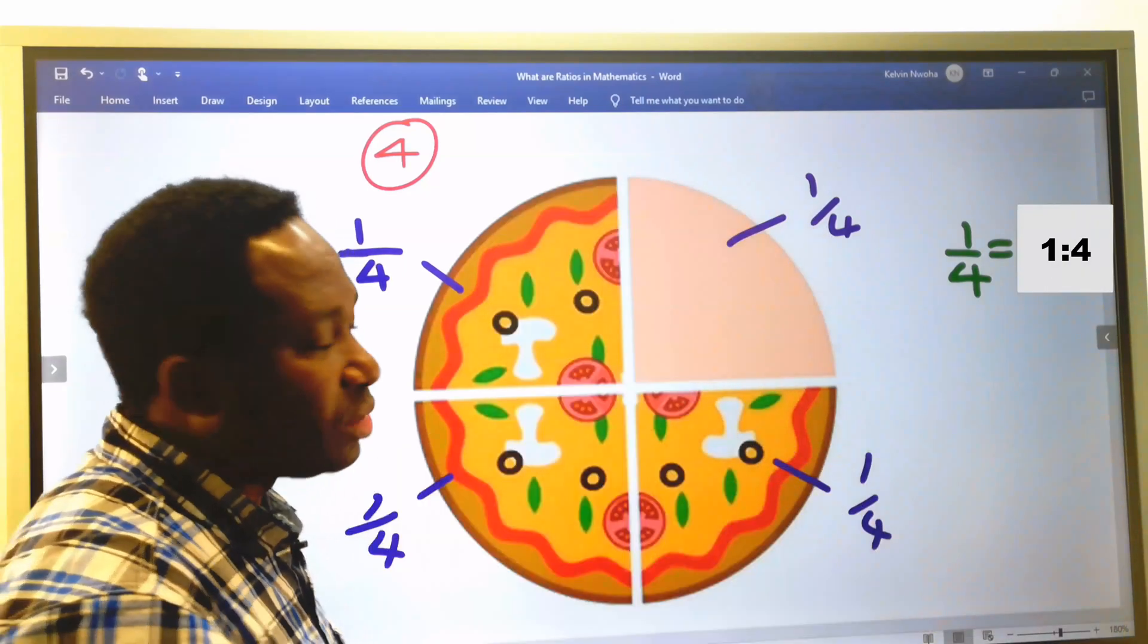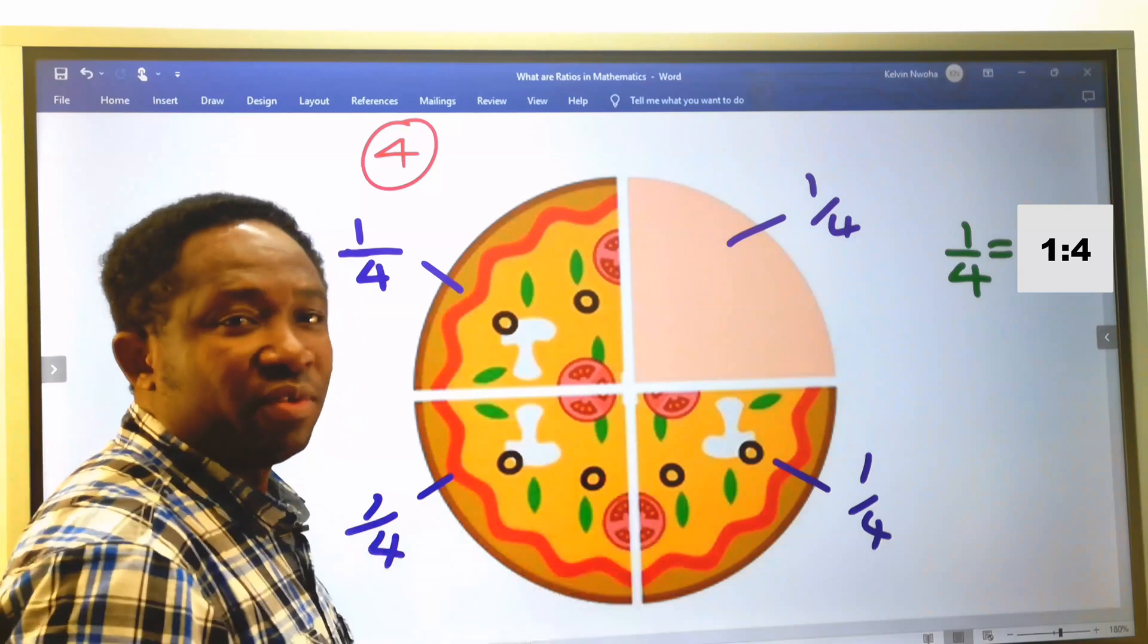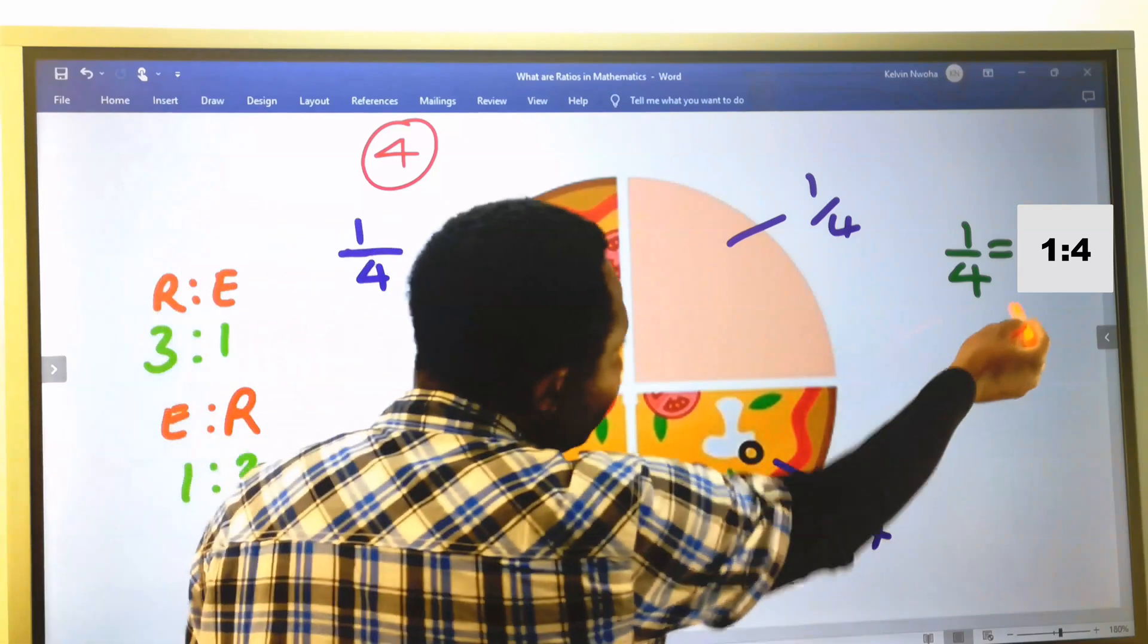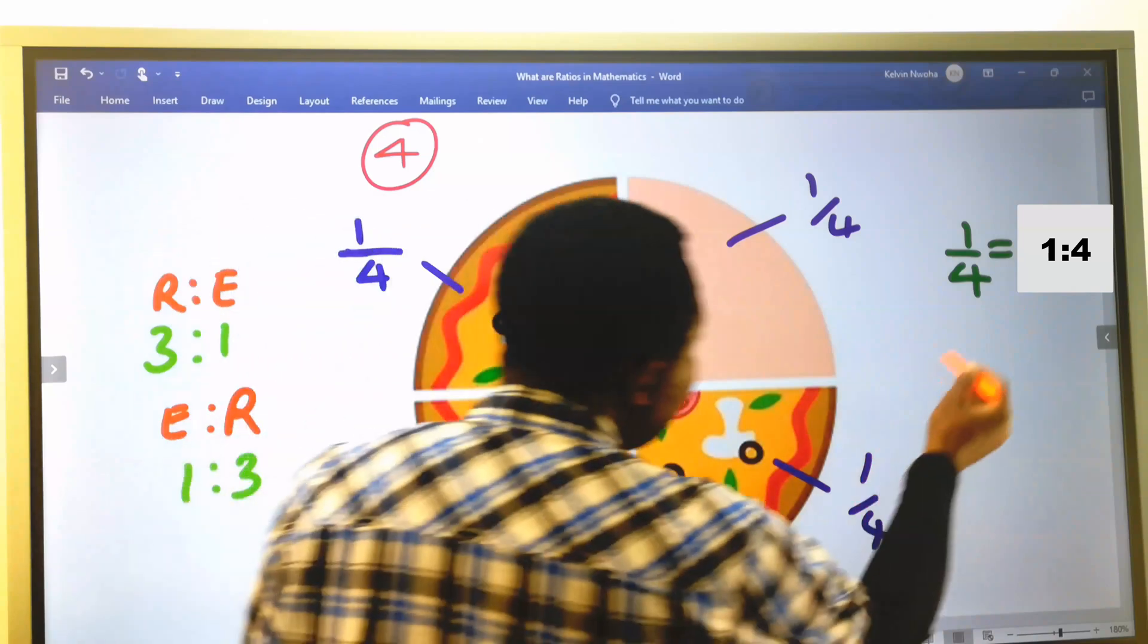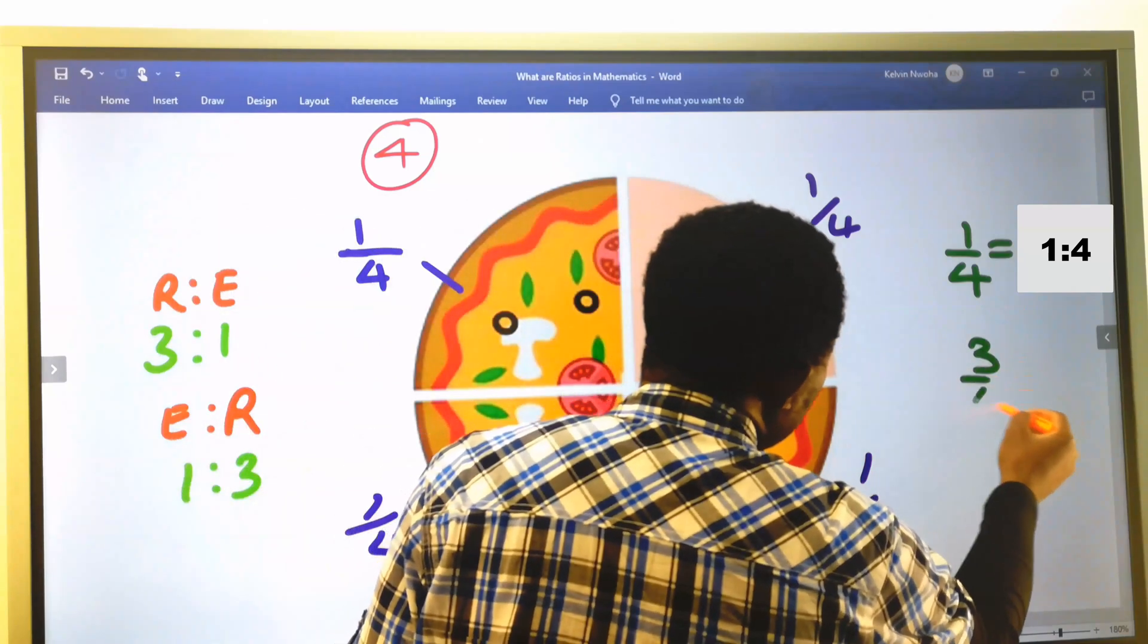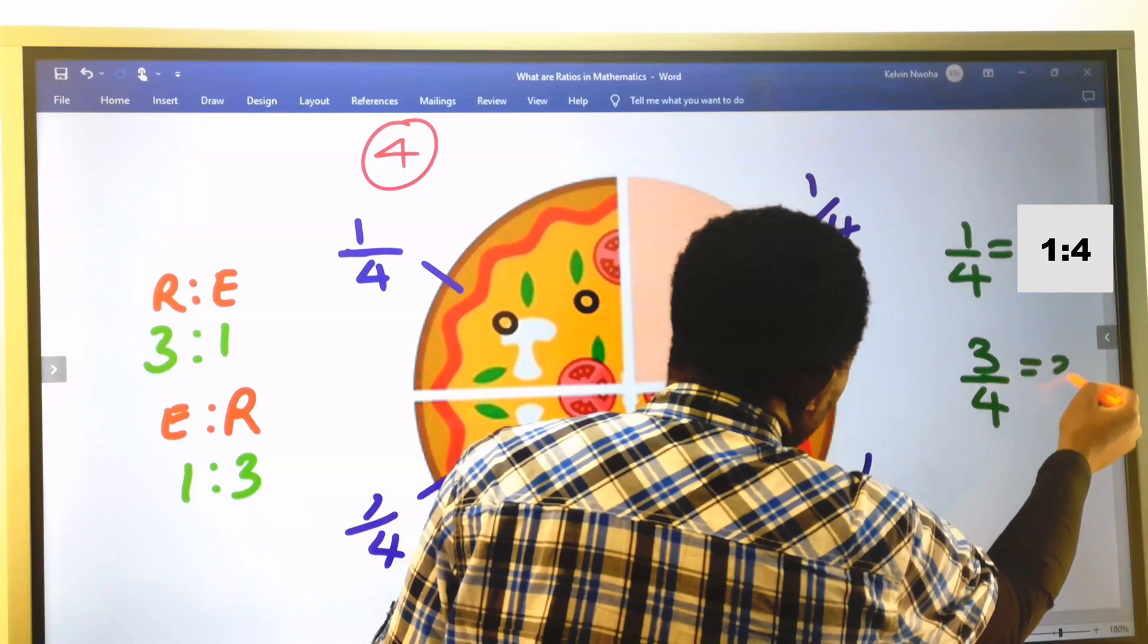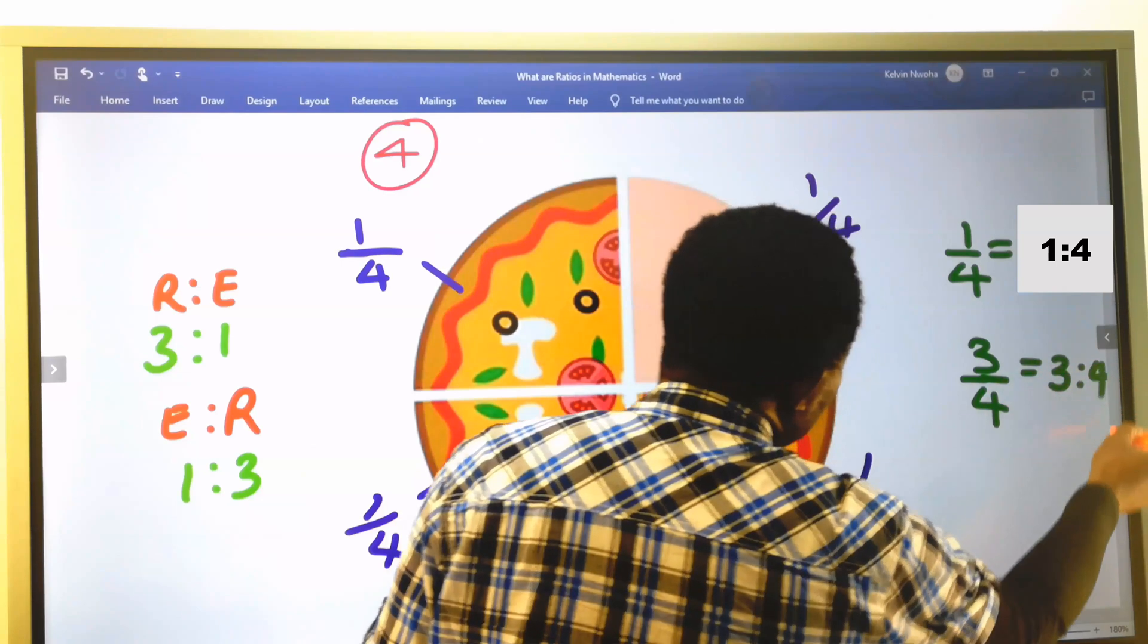And if I want to consider the remaining part of the pizza after this was eaten, that will become 3 to ratio 4. We can write it 3 to ratio 4.